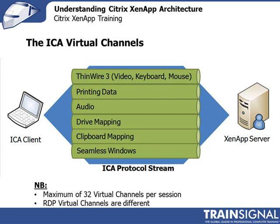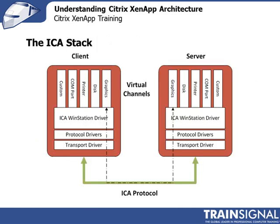Every one of the virtual channels — up to 32 — will equate to its counterpart on the other side. The client is transmitting to the server; if you're sending graphics, they travel through the OSI layers from point A to point B. The data is decrypted and connects the client session to the server's equivalent virtual channel. That's how data is exchanged between the client and the server.